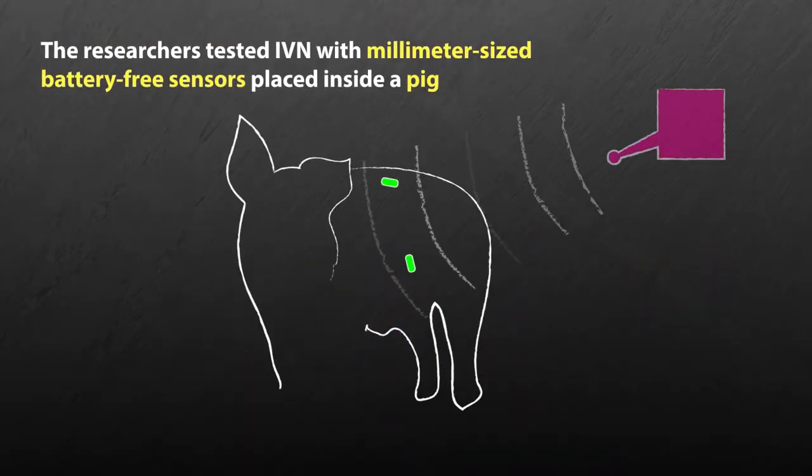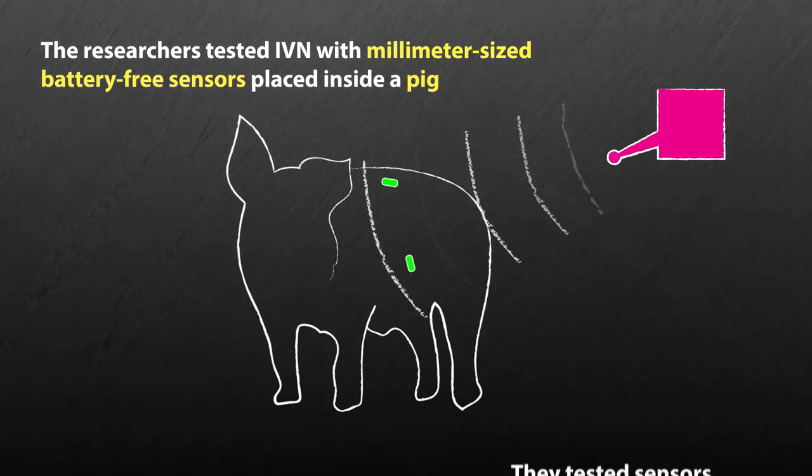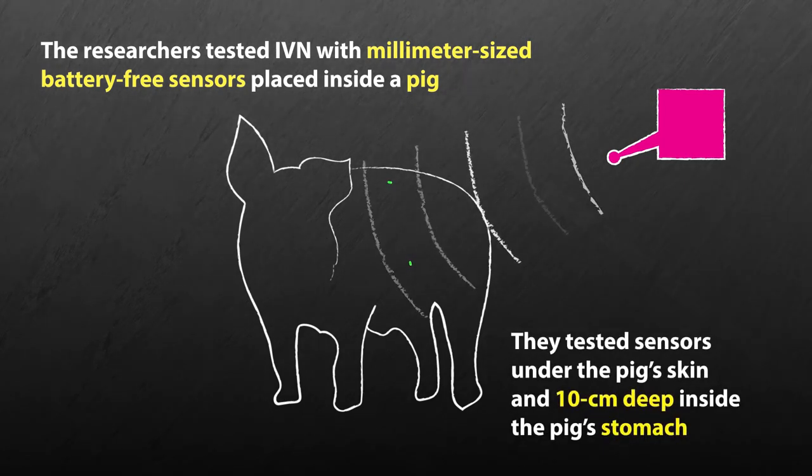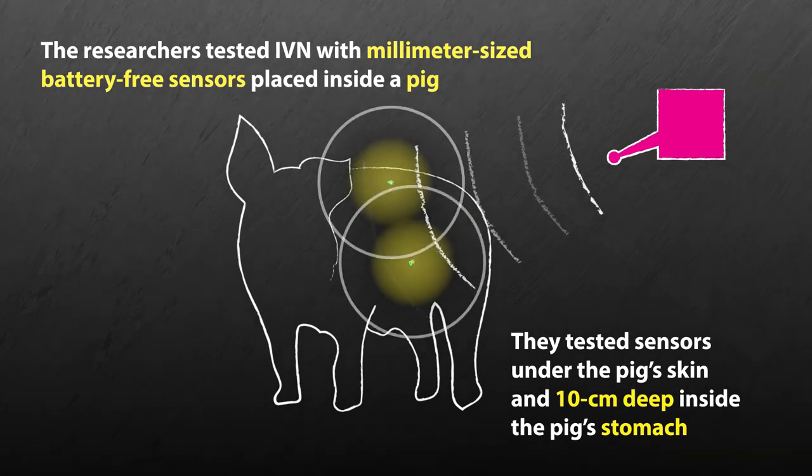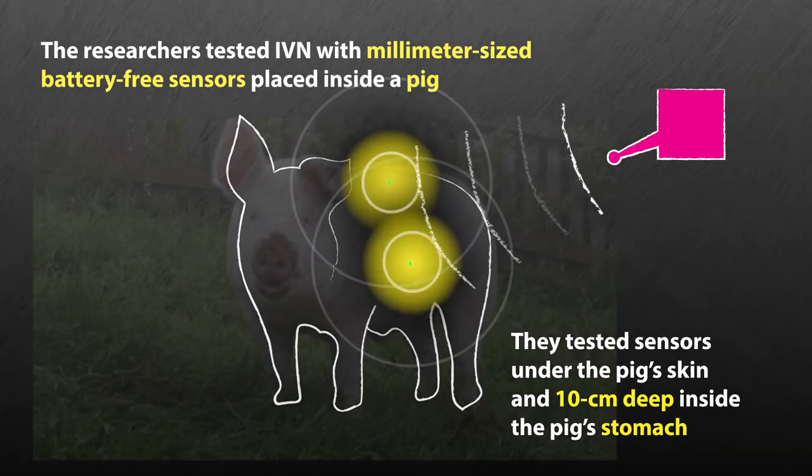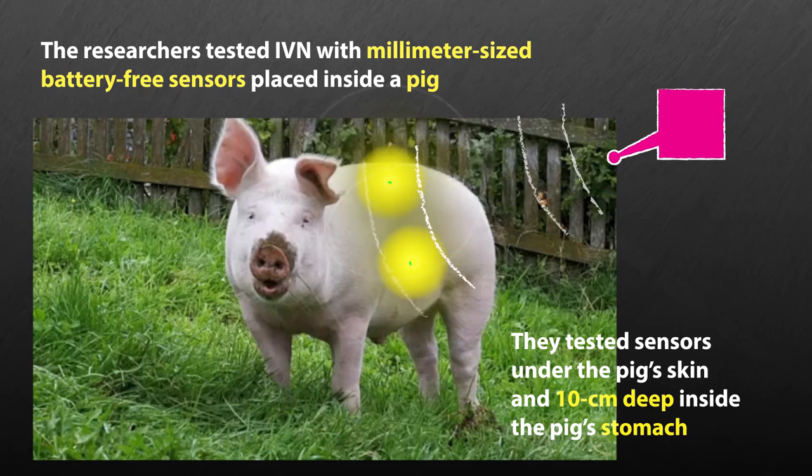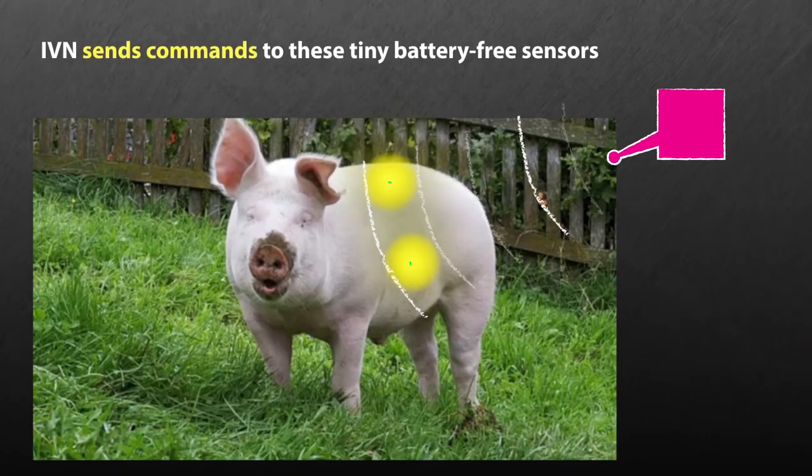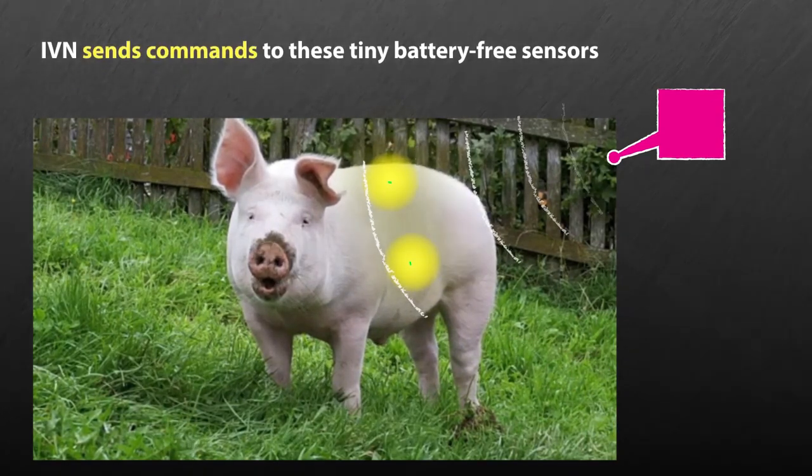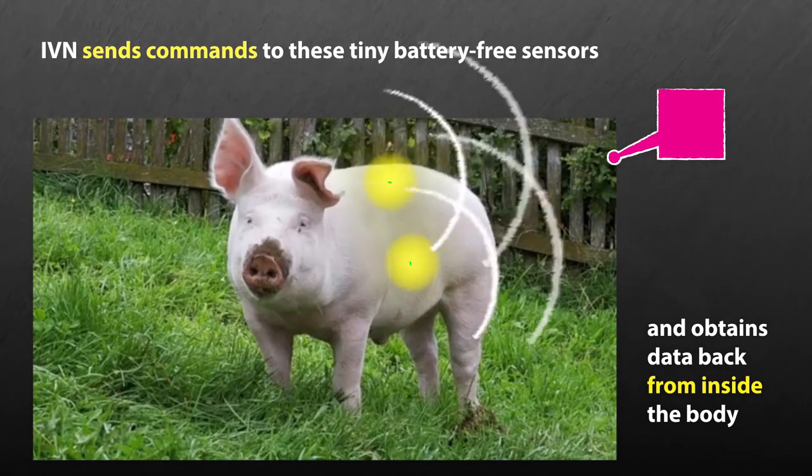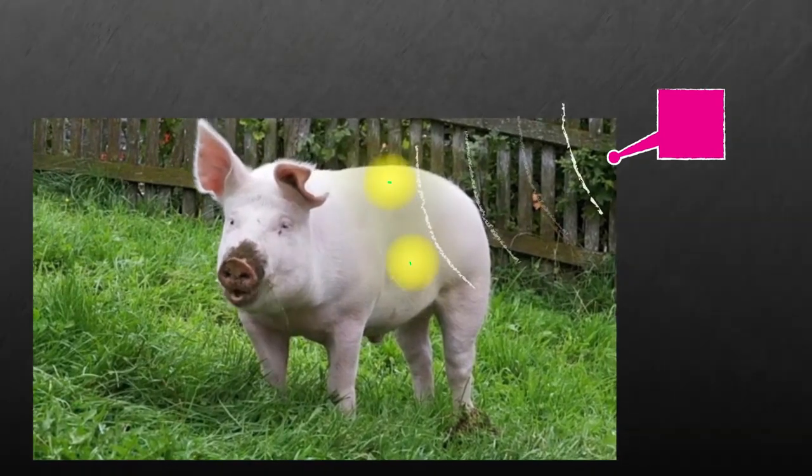The researchers have tested IVN with millimeter-sized, battery-free sensors placed inside a pig. They have shown how to power up and communicate with battery-free tags placed under the pig's skin and 10 centimeters deep inside the pig's stomach. IVN sends commands to these tiny, battery-free sensors and obtains data back from them from inside the body.